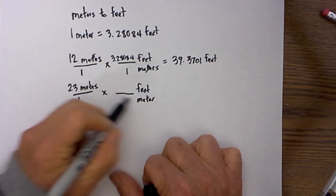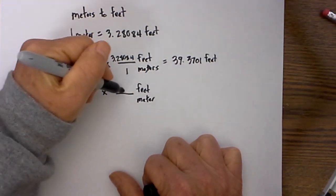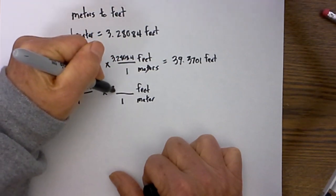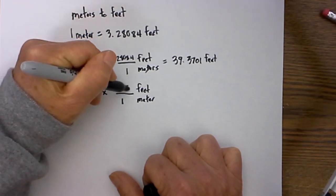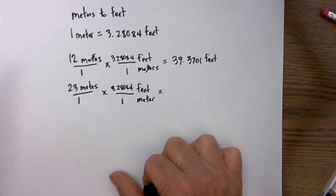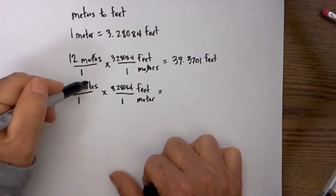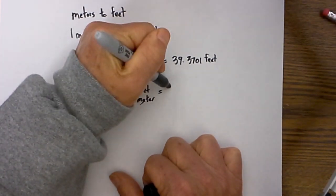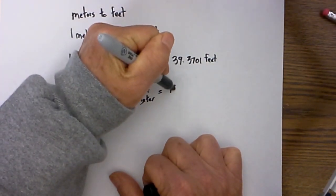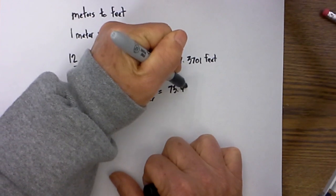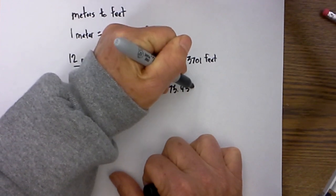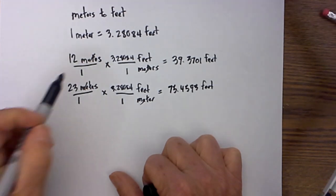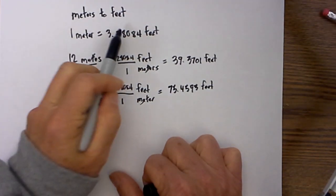I want to go to feet, I have been given meters. Which is larger, meters or feet? 1 meter is equal to 3.28084 feet. Meters cancel, and 23 times 3.28084 is 75.4593 feet.